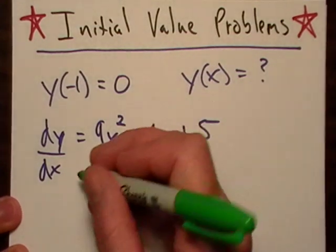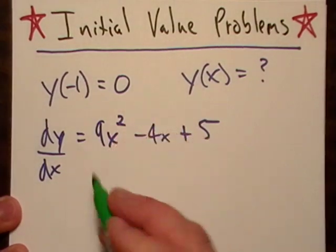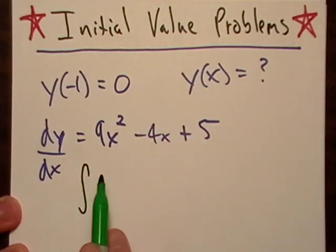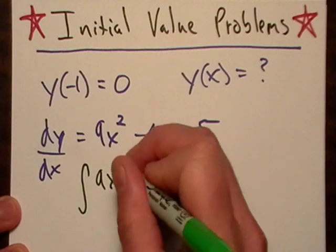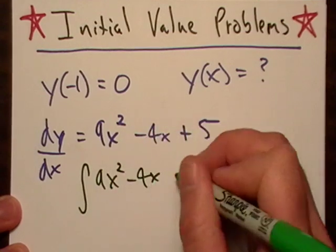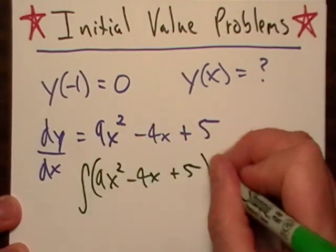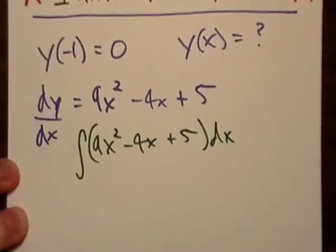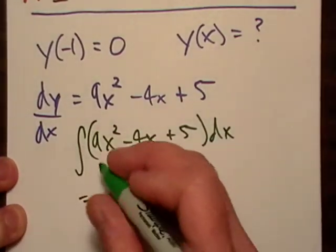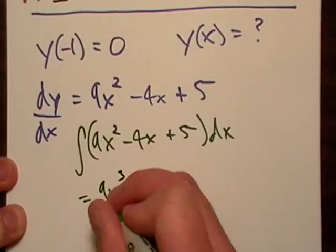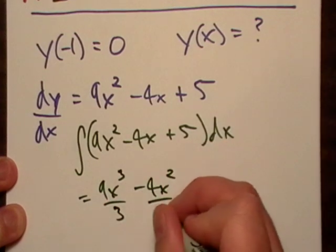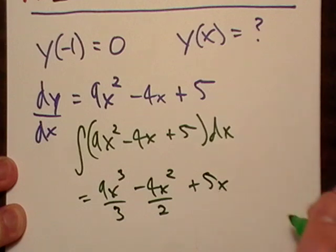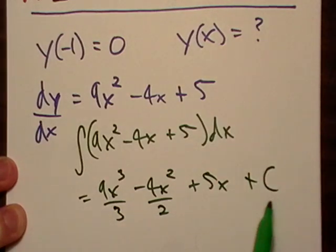Now, just recall that if I integrate this thing, I'm going to end up with kind of not really the original function, but I'm going to end up with something. Let me just do it. So this is going to be, what is it going to be, a nine x to the third over three minus four x to the second over two plus five x plus c.